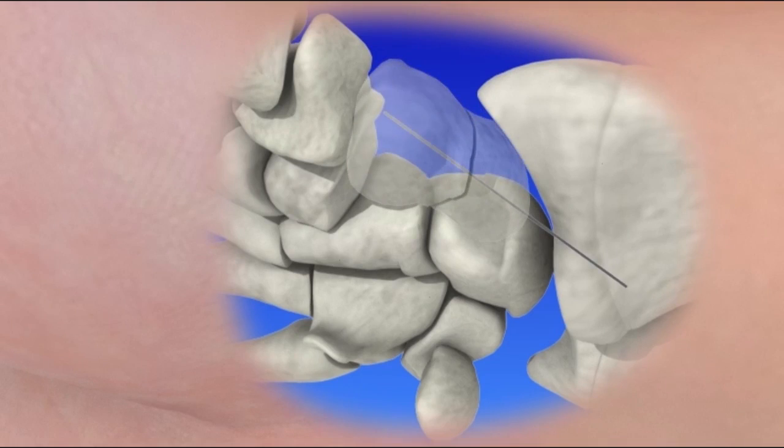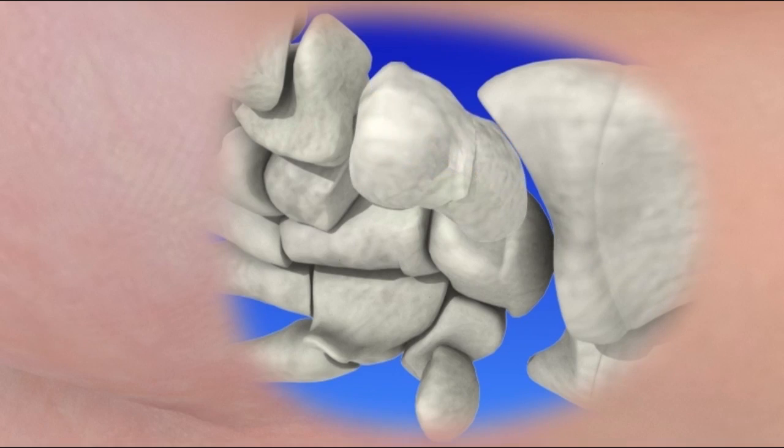A guide wire is placed across the fracture. A headless screw is placed over the wire, compressing the fracture together. The incision is then closed.